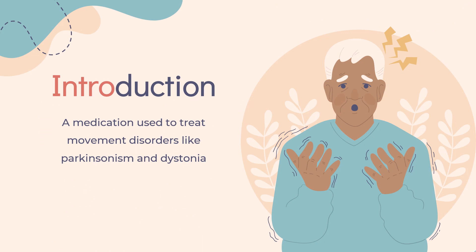What is benztropine? Benztropine, known as benztropine in the United States and Japan, is a medication used to treat movement disorders like Parkinsonism and dystonia, as well as extrapyramidal side effects of antipsychotics, including akathisia. It is not useful for tardive dyskinesia.